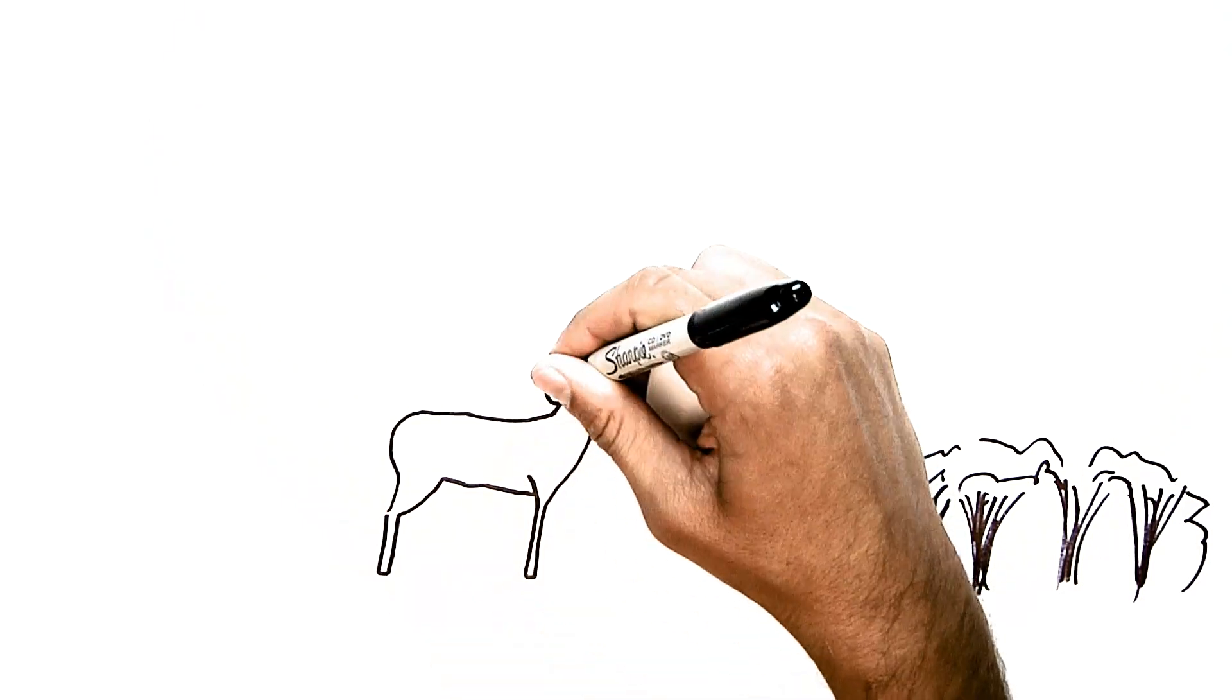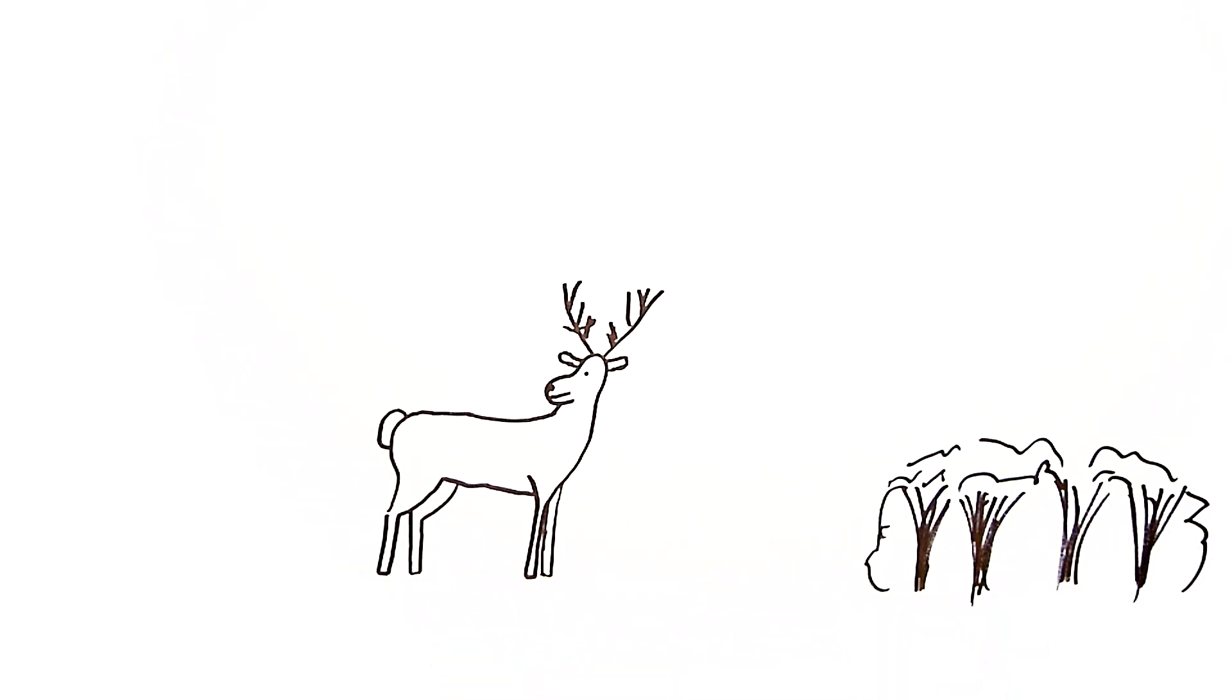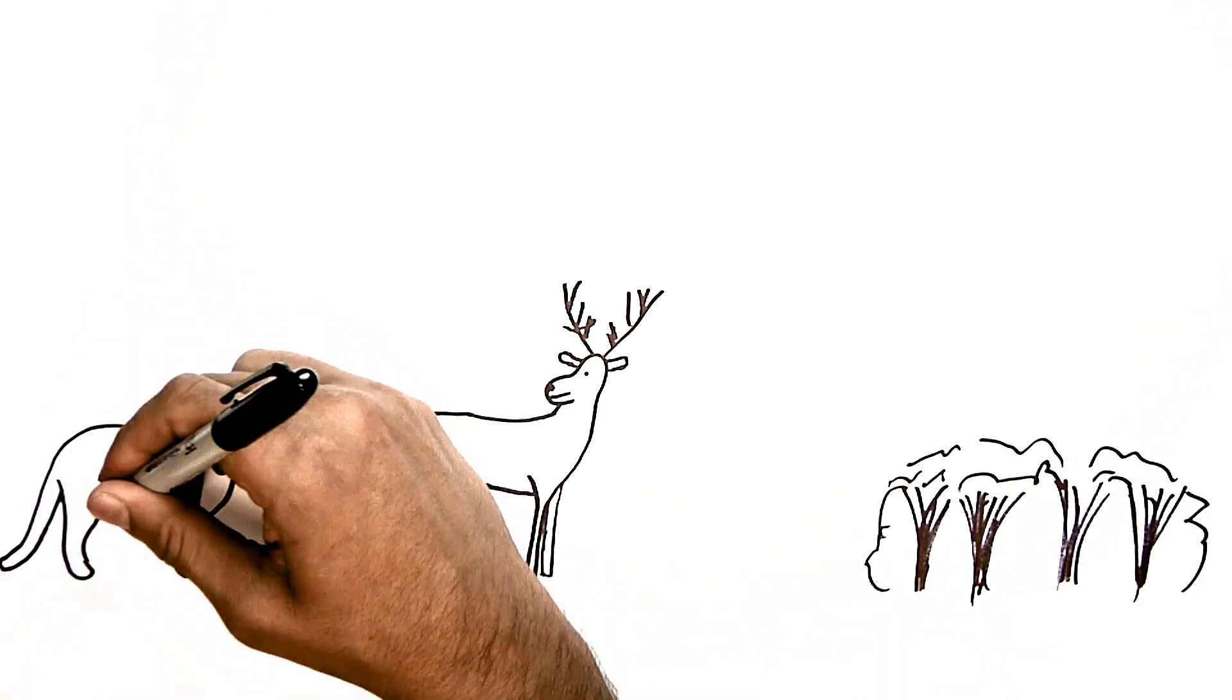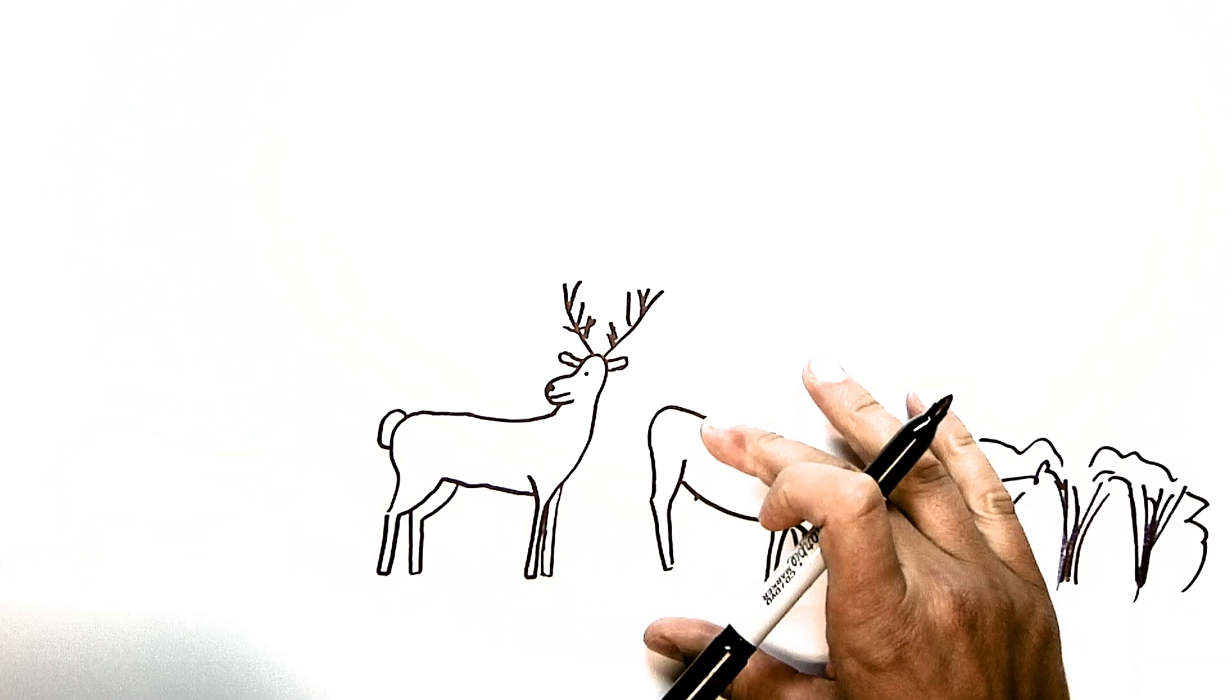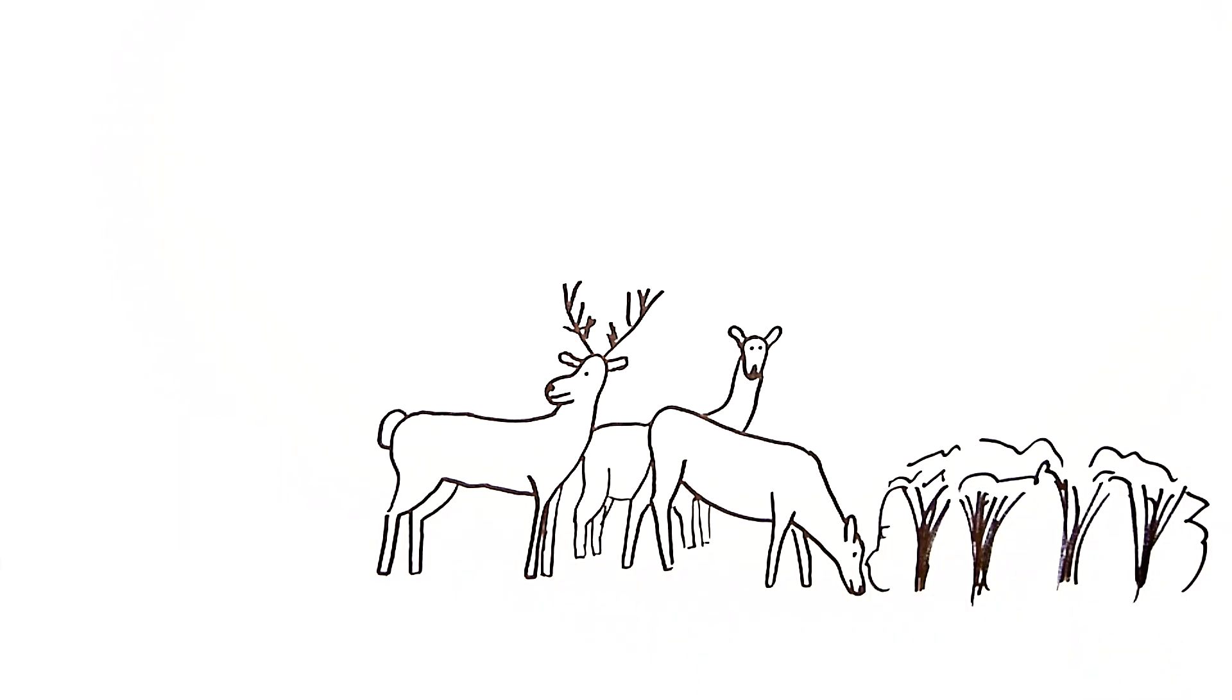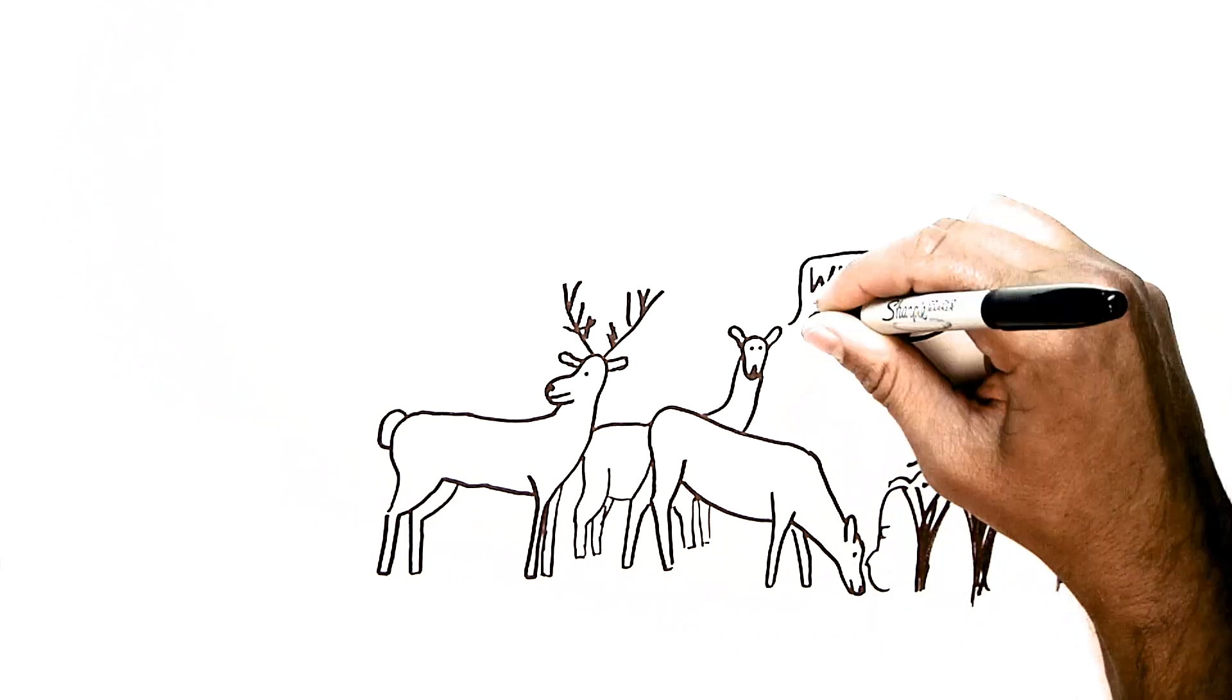For example, the natural predators of white-tailed deer like mountain lions, wolves, and coyotes have had their numbers reduced in the past. But with no predators left, the number of deer can grow out of control. And they can eat away all the vegetation, including the homes and food of other animals, until there is almost nothing left.